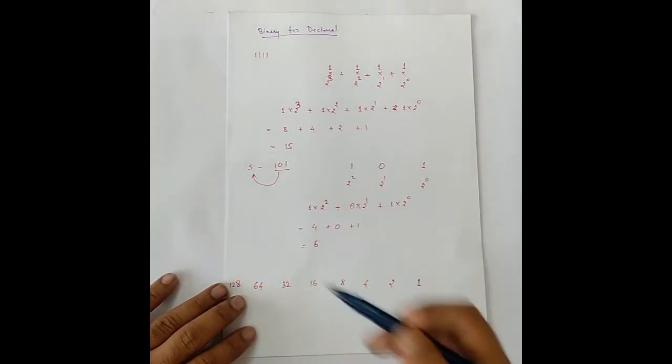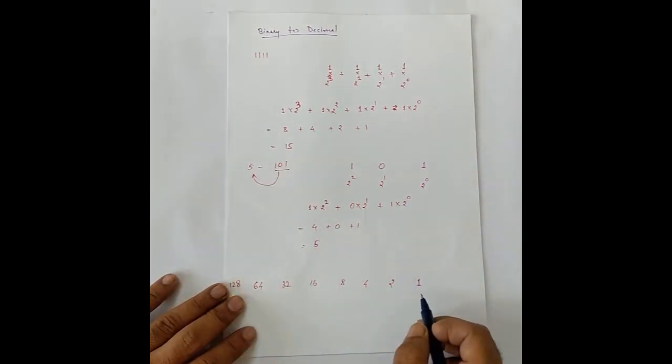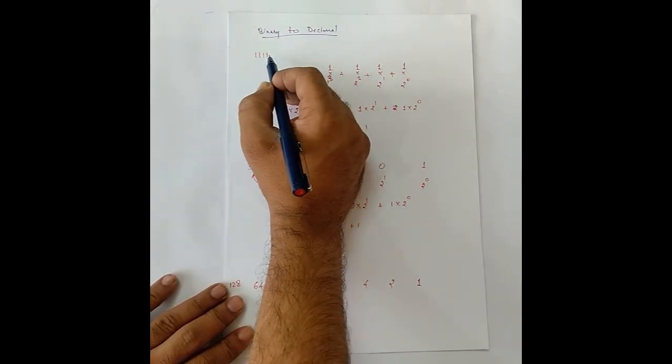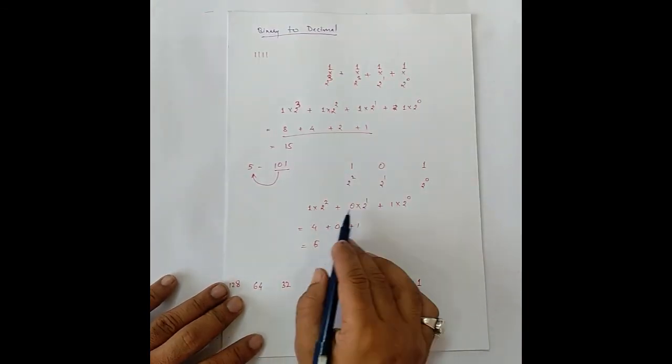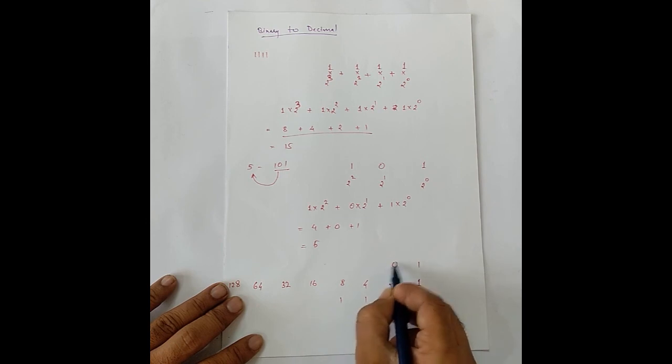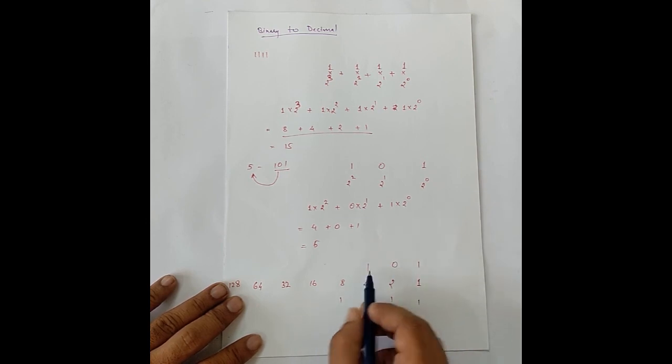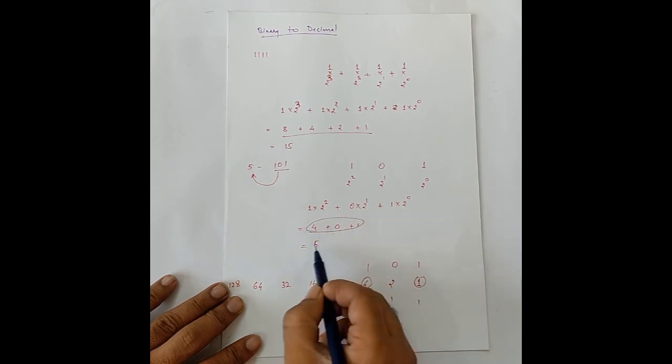All the decimal values that we have starting from the lowest significant weight, the smallest one, that is towards the rightmost side, we start placing them here: 1, 1, 1, 1. And then we add these numbers wherever there is 1, we add them. So 8 plus 4 plus 2 plus 1, which is what we had got here. Similarly, for 101, we can have 101. Wherever there is 1, we add only those numbers. We take 4 and we take 1, which is what we had got here, and it gives us 5.